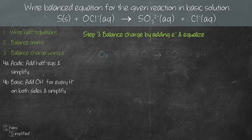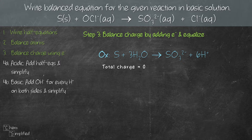Moving on to step 3: we need to balance the charge by adding electrons. From the balanced oxidation equation, the total charge on the left-hand side is 0 — S is an element with no charge, and H₂O is a neutral compound, so together they give a total of zero charge. On the right-hand side, we have -2 from SO₃²⁻ and +6 from 6 H⁺, giving a total of +4. In order to balance the charge, we need to add 4 electrons on the right-hand side, so the total charge becomes zero on both sides.